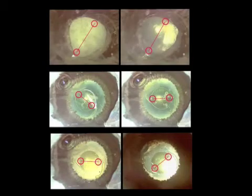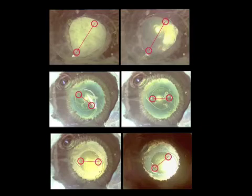In conclusion, blunt trauma in this experimental setting was not able to cause IOL rotation. Incision leakage and anterior chamber collapse after trauma may cause IOL rotation. Thank you for your attention.